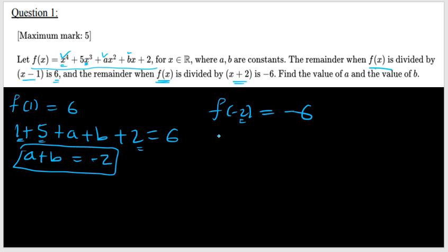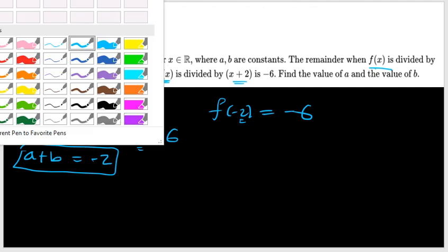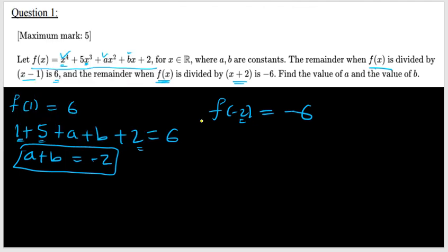Let us see, let us use another color this time. So when I plug negative 2 here, it will be 16. Again, in the second part here, when I plug negative 2, it will be negative 40 plus 4a. Again, insert negative 2 here. Negative 2 times b will be negative 2b plus 2, which is equal to negative 6.